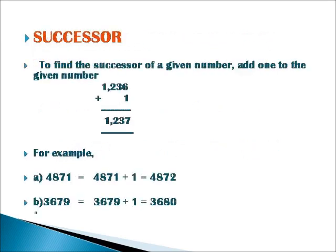In numbers, a second topic is about successor and predecessor. Here, first we are going to learn about successor. The definition is to find the successor of a given number, add 1 to the given number. So we get the next number as a result. That is, when we add 1 to the number 1236, we get 1237. Therefore, the successor of 1236 is 1237.